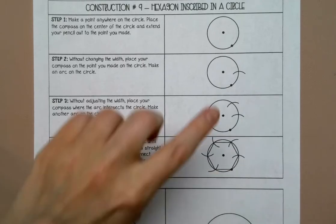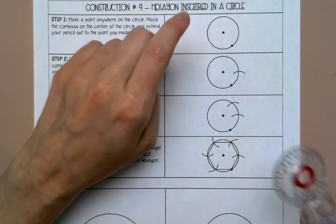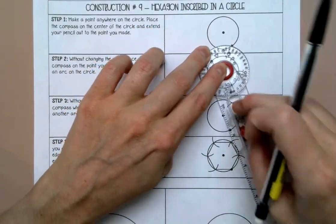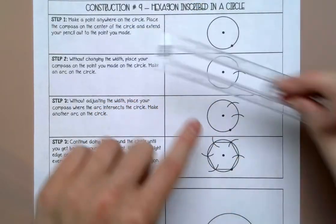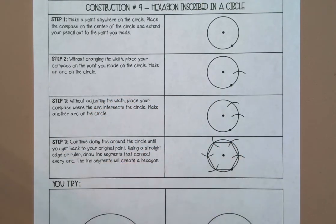So we're going to start by putting a point on the circle. We're going to measure the radius from the center to that point, and then we're going to draw arcs all the way around, and then we will connect all the arcs.